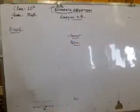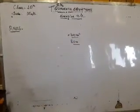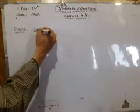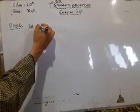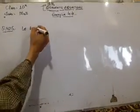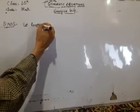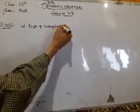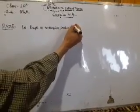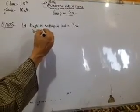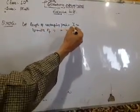So is this possible? For example, let's assume that the length of rectangular park, we take as x meters, and breadth of rectangular park we take as y meters.